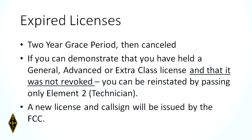Anybody with an expired amateur radio license that was not revoked — if you can demonstrate that you had the general, advanced, or extra class license, even by old amateur radio call books — you can get your old license back simply by taking the technician test, element 2. You won't necessarily get your old call sign back; you'll likely get a new call sign issued by the FCC.